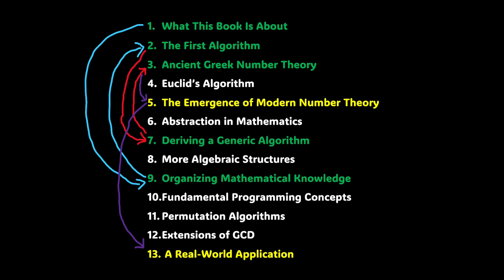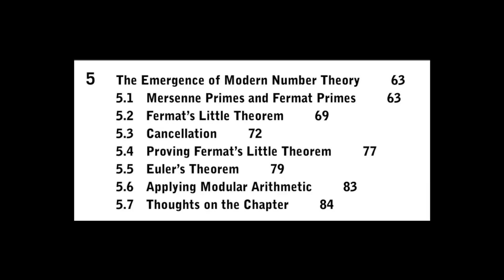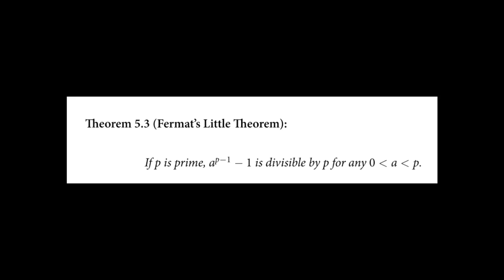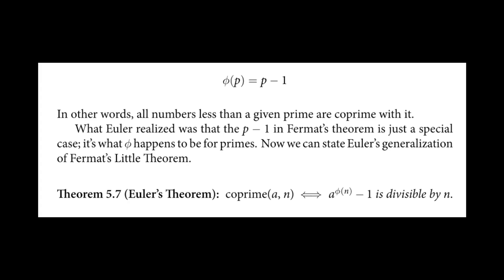Chapter 5 is a continuation of what we learned about primes and the Sieve of Eratosthenes. It continues to talk about Mersenne primes and Fermat primes, then moves to Fermat's Little Theorem, and later introduces the generalization of that — Euler's Theorem. A couple of sub-chapters later, it covers Euler's theorem as the generalization of Fermat's Little Theorem.